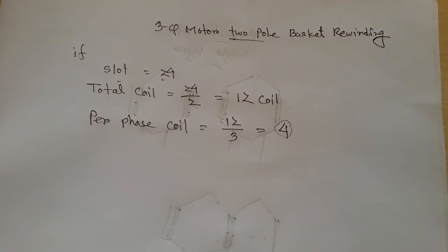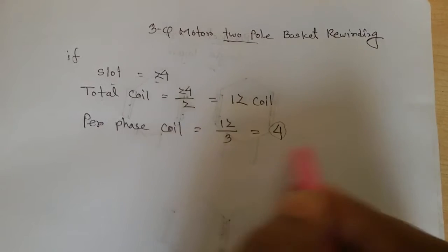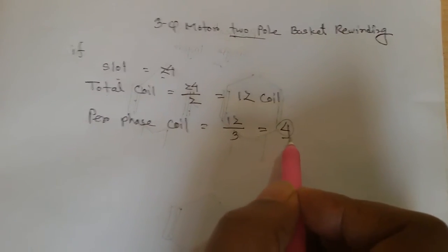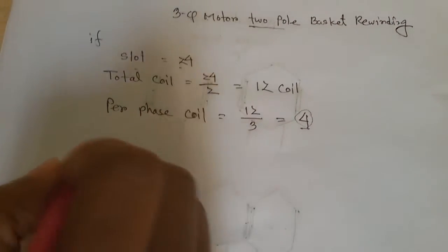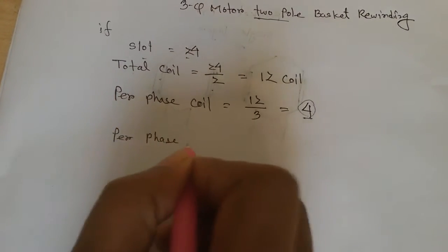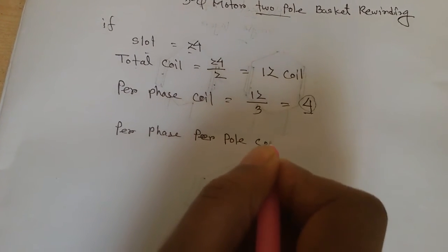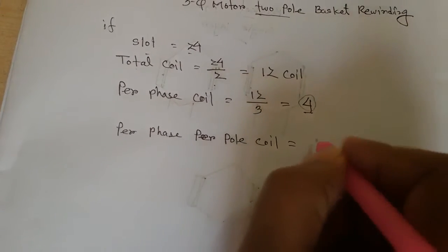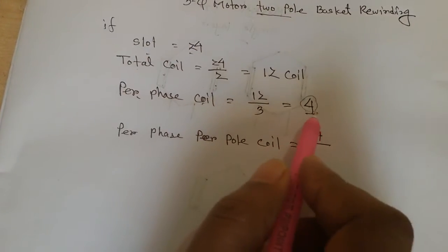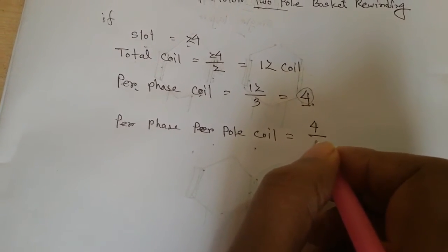So need 3 coil groups. 4 coils divided by 2. So I write here: per phase per pole coil is 4 divided by 2.